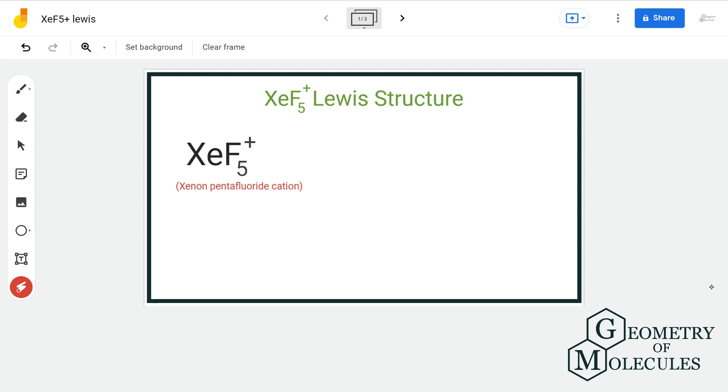It's the chemical formula of xenon pentafluoride cation. Now xenon is a very stable element as it has complete octet and is present in the 18th group in the periodic table. But sometimes under extreme conditions,